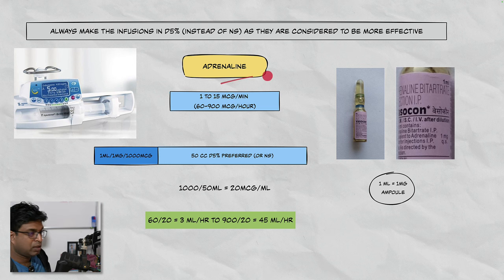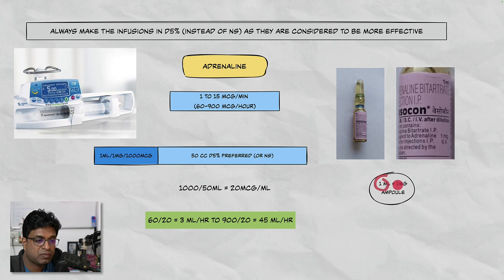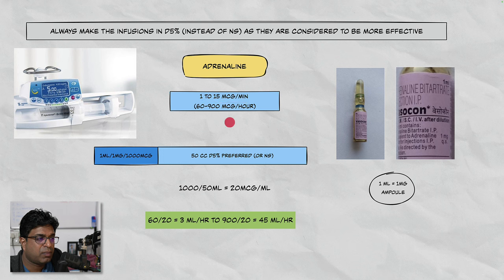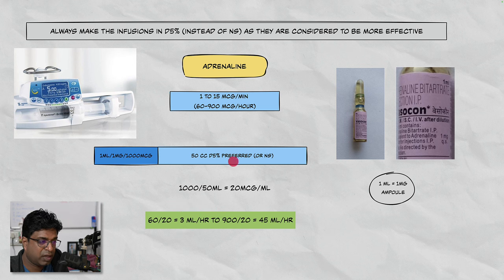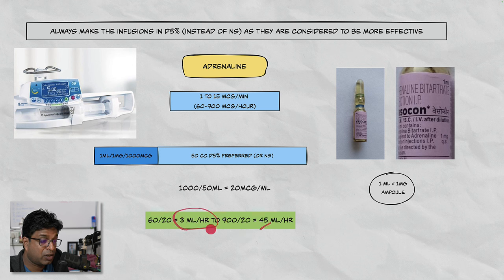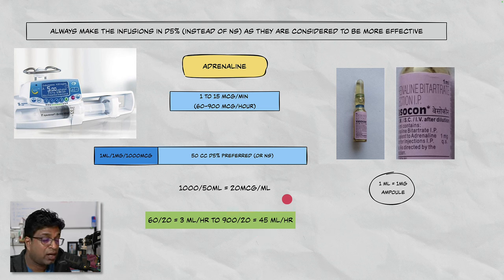Adrenaline comes as a 1 mL ampoule containing 1 mg. The dose is 1 to 15 micrograms per minute, similar range to noradrenaline. Take one ampoule into a 50 cc syringe — 1 mg = 1000 micrograms in 50 mL gives 20 micrograms per mL. For 60 to 900 micrograms per hour: 60 ÷ 20 = 3 mL/hr, 900 ÷ 20 = 45 mL/hr. The running rate for adrenaline is 3 to 45 mL per hour — practically, we rarely go above 30 mL/hr, but it depends on the institution.